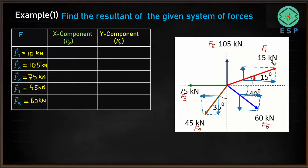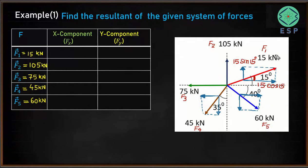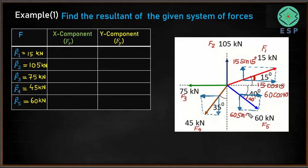Since F1 is 15 kN and makes an angle of 15 degrees, the x component is 15 cos 15° and the y component is 15 sin 15°. For F5, the angle is 40 degrees, so the x component is 60 cos 40° and the y component is 60 sin 40°. We are able to resolve the 60 kN force along both the x and y directions.